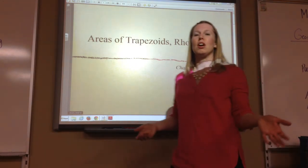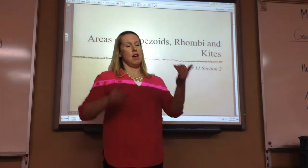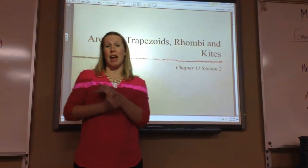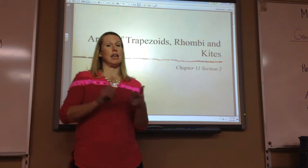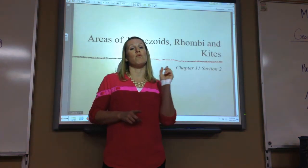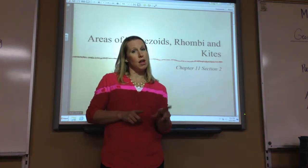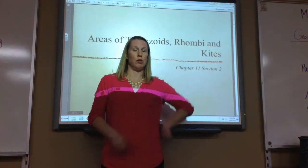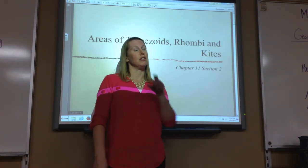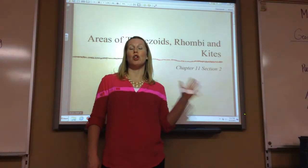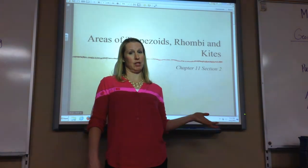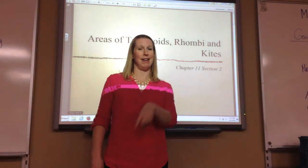But before we start, we need to review a few things. You have to remember the Pythagorean Theorem — a squared plus b squared equals c squared. If you know the hypotenuse, I hope you said subtract. And if you don't know the hypotenuse, I hope you said add.